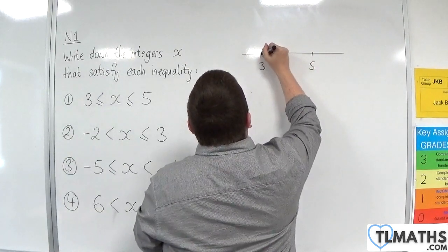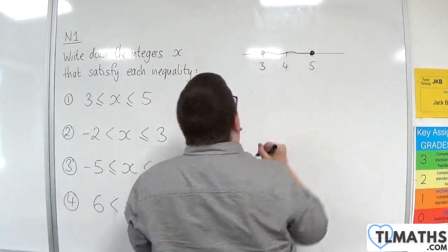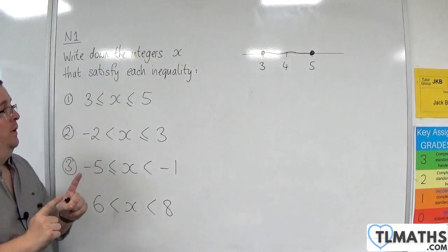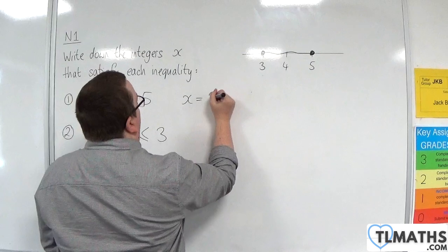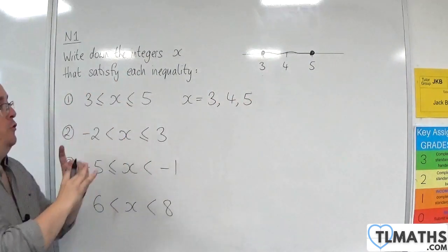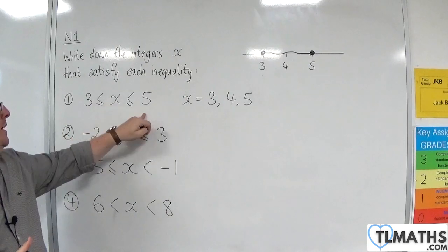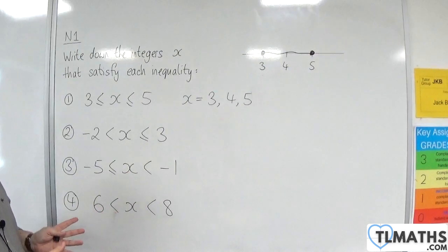We are including 3, we are including 5, and we want anything between. And so the values of x that satisfy it are 3, 4, and 5. 3 and 5 are included, and so the only one in between is 4. So it's all 3 of those that we want.